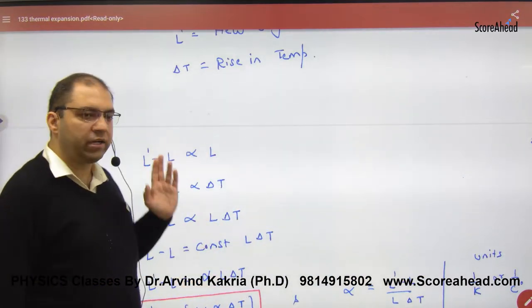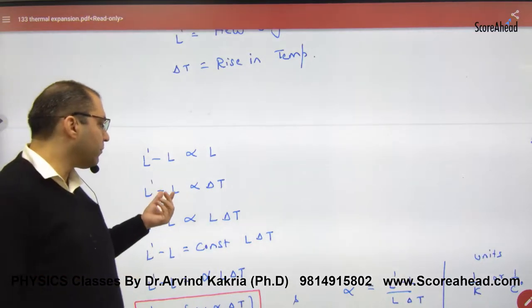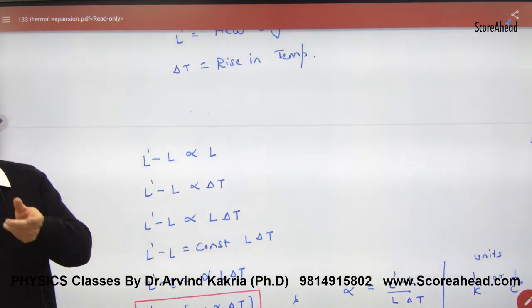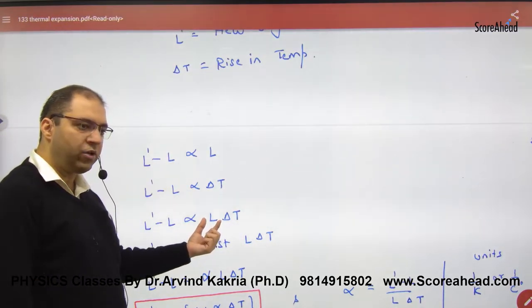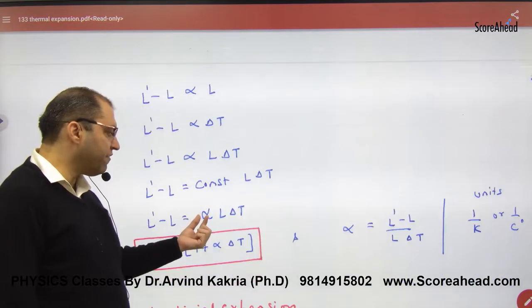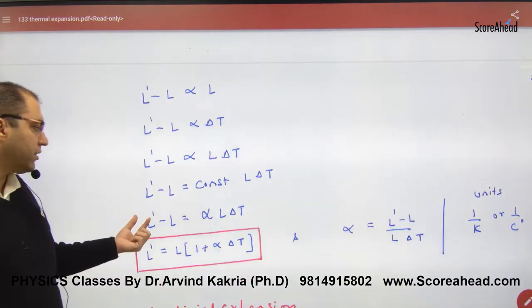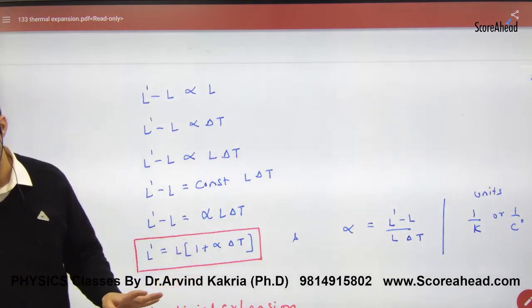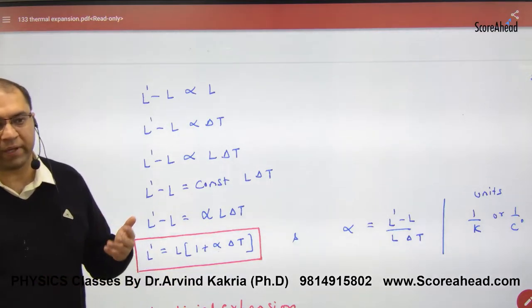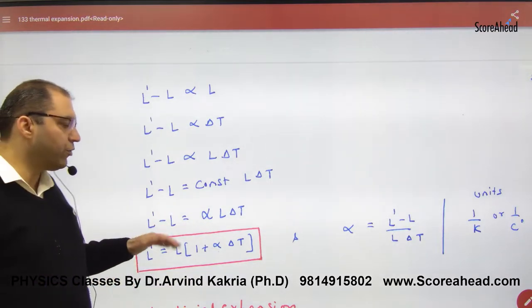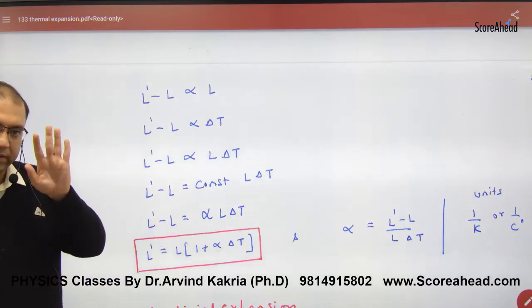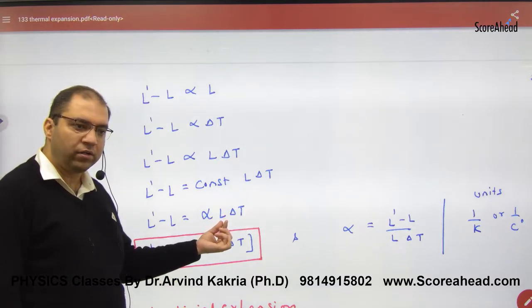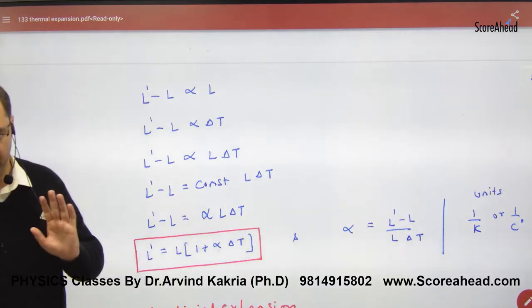The change in length is directly proportional to original length and also proportional to the change in temperature. If you combine them, there's a constant, alpha. The change in length also depends on alpha, which represents the material of the wire. If the material expands more, alpha's value will be higher. Three factors determine the change in length: increase in temperature, original length of the wire, and alpha, the coefficient of linear expansion.